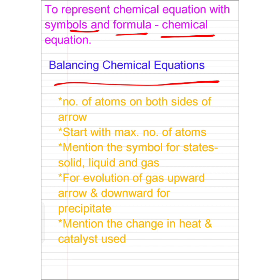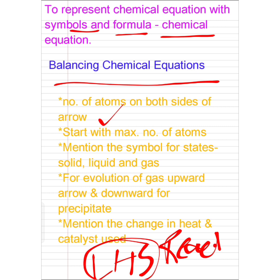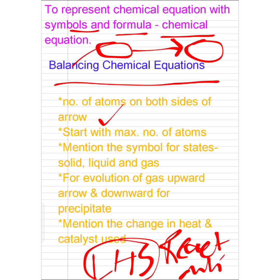First point: the number of atoms on both sides of the arrow. That is, on the LHS — the left hand side — we have the reactants, and on the right we have the products. The atoms on both sides, reactants and products, should be equal. We have to balance and check this. If they are not equal, we will try to balance them.